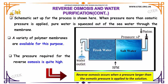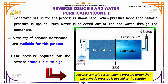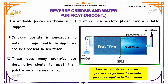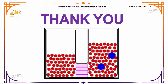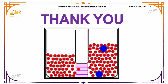The schematic setup of the process is shown here. When pressure more than osmotic pressure is applied, pure water is forced out of sea water through the membrane. A variety of polymer membranes are available for this purpose. The pressure required for reverse osmosis is quite high. A workable porous membrane is a film of cellulose acetate placed over a suitable support — cellulose acetate is permeable to water but impermeable to impurities and ions present in seawater. These days many countries use desalination plants to meet their potable water requirements. Thanks for watching this GTEK Techno Solution product on osmosis and reverse osmosis.